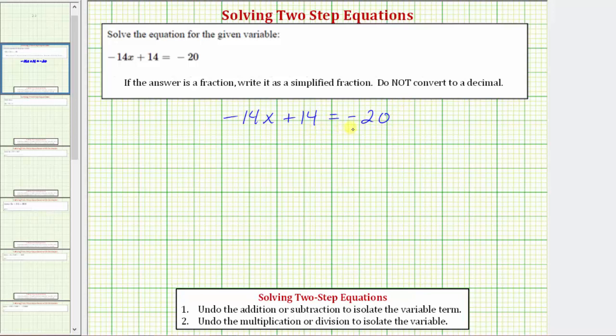In order to solve the equation for x, we need to isolate x on one side of the equation. Because the x term is on the left side of the equation, our solution will be in the form x equals some value that makes the expression on the left side of the equation equal to negative 20.